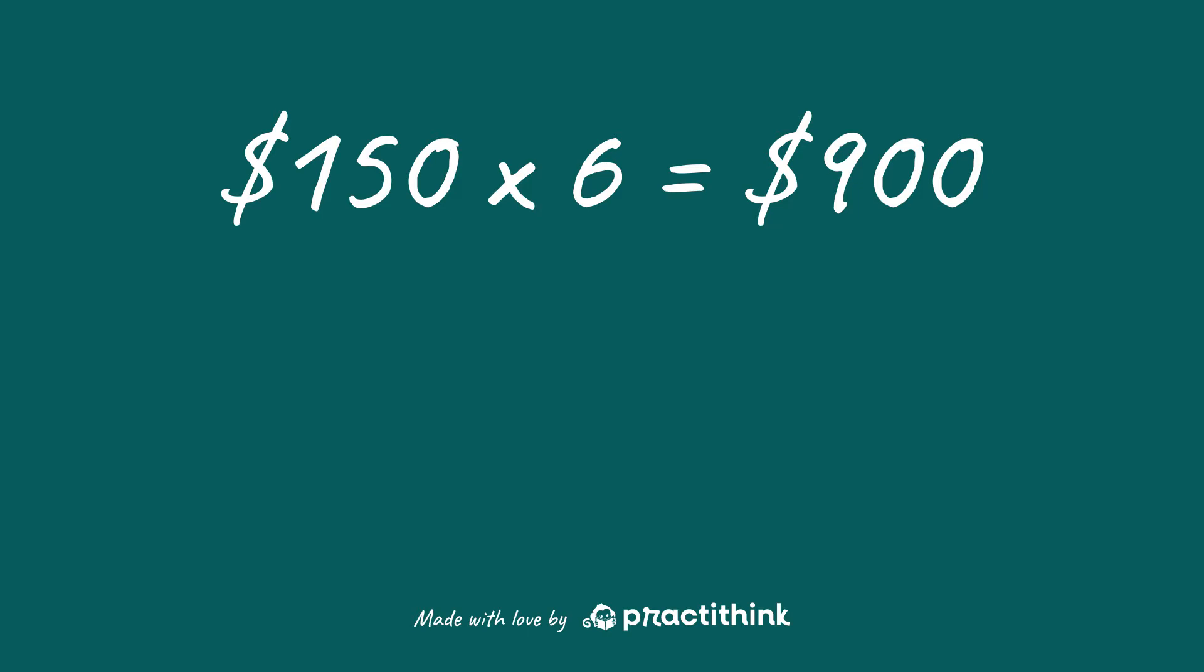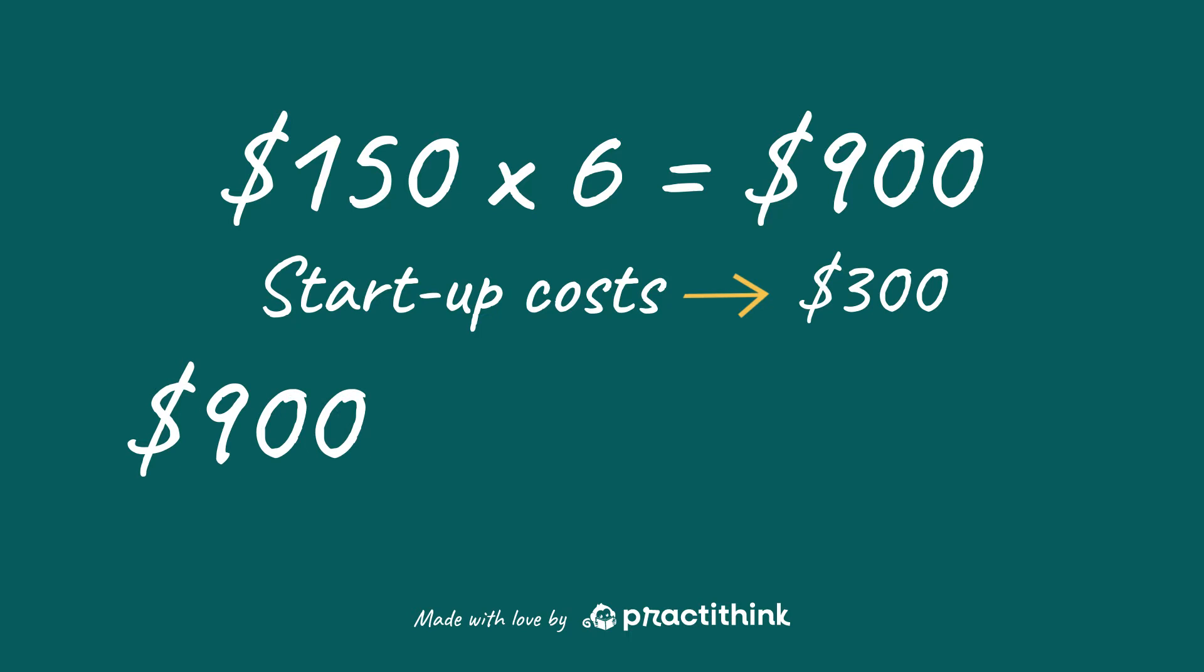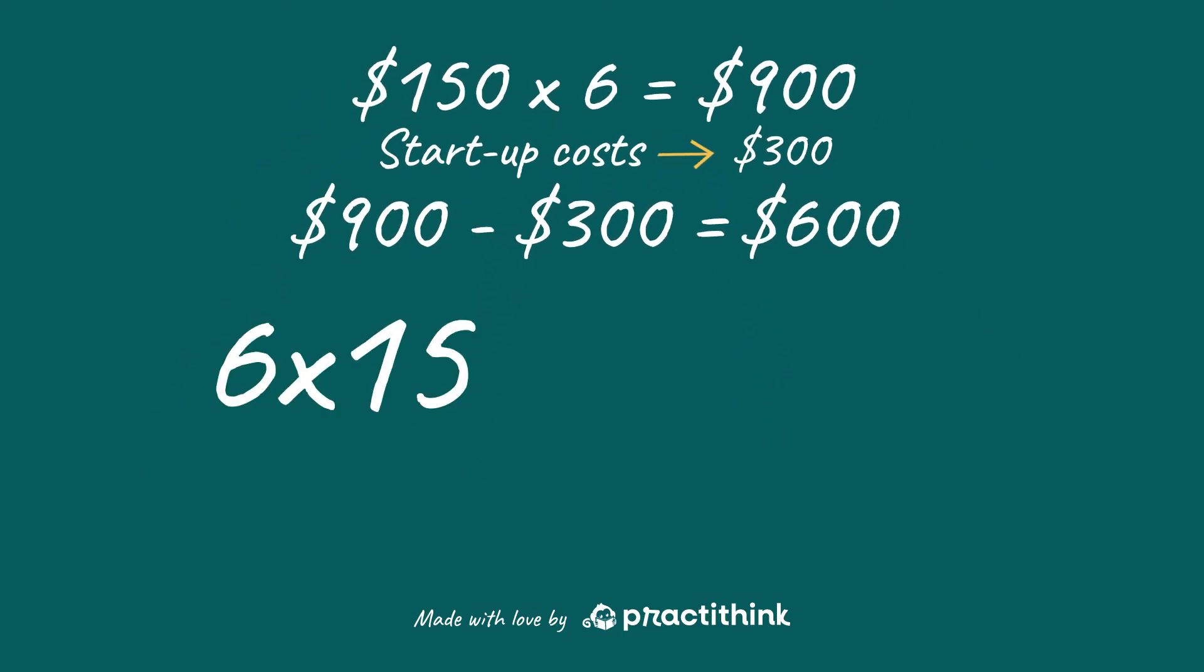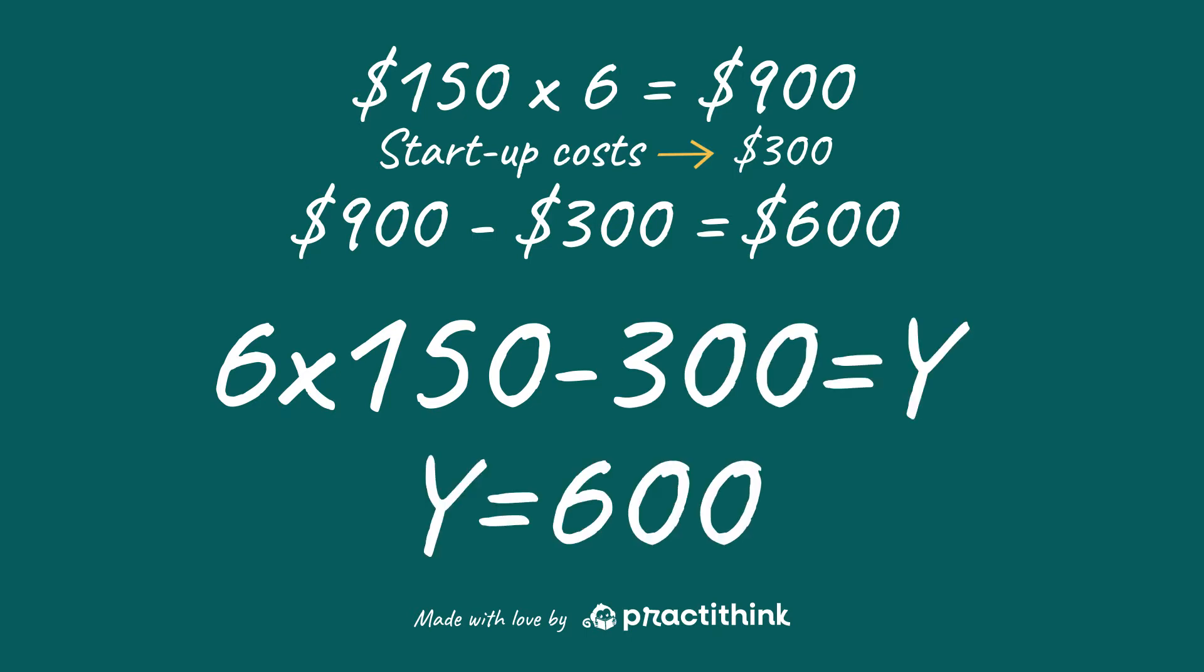Now we have to take away the startup costs. 900 minus 300 is how much? Easy, right? Your profit over 6 months is $600. Yep, that was a linear equation too. 6 times 150 minus 300 equals Y. Let's see how to solve them.